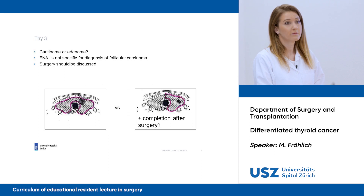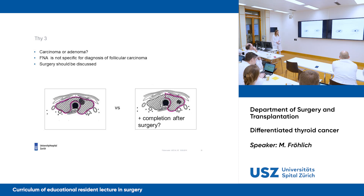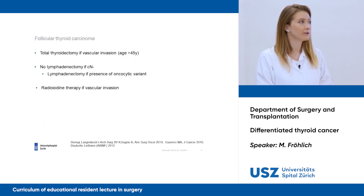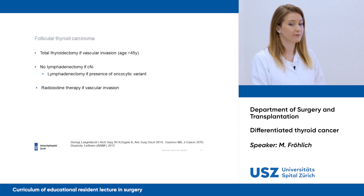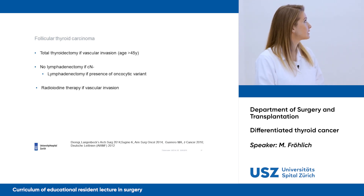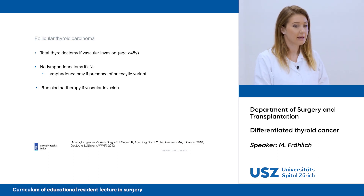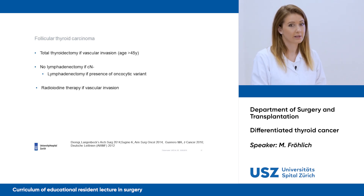We can decide whether to go first with a total thyroidectomy or first a hemithyroidectomy where the nodule is located, and then complete the surgery. This should be discussed at an interdisciplinary tumor board or with the patient. If we have follicular thyroid carcinoma, we have to perform a total thyroidectomy because of vascular invasion in patients over 45 years. We should not perform a prophylactic lymphadenectomy if we do not have any suspicion for lymph node metastasis, but we must do one if we have oncocytic variant in the histology. Radioiodine therapy is not indicated in follicular carcinoma if there is no vascular invasion.